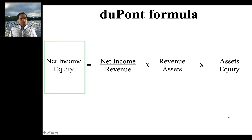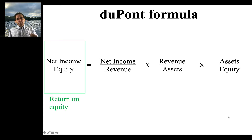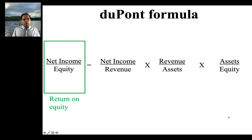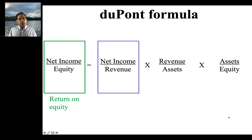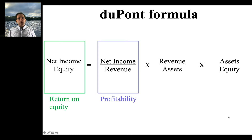So what are each of these telling us? Return on equity is a measure of the profitability that a company is able to generate based on the investment it's making. The first component in the DuPont decomposition is net income over revenue — that's basically profitability — how much profit you're able to derive from every dollar of revenue that you charge.